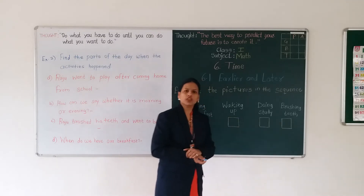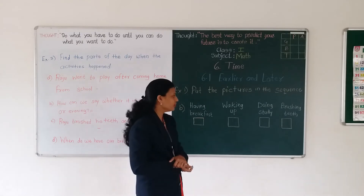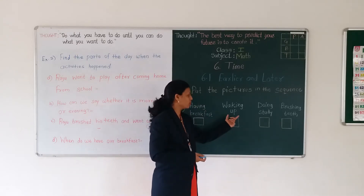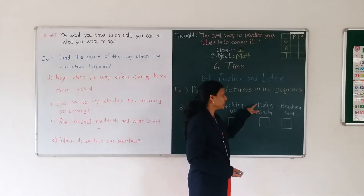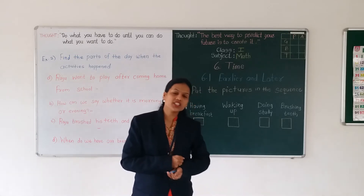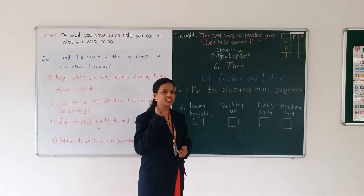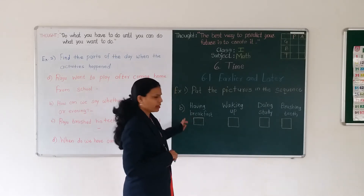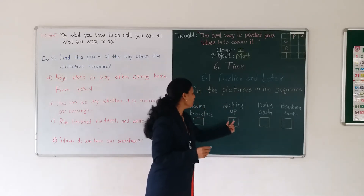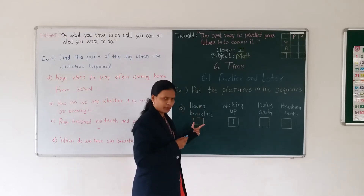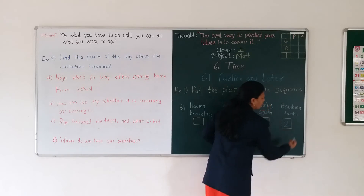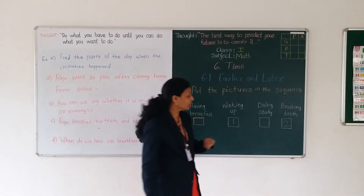The first picture shows the boy is having breakfast. The second picture shows the boy is waking up in the morning. The third picture shows he is doing study. And in the fourth picture, he is brushing his teeth. Can you arrange these activities in sequence? What is the first, earlier activity? Waking up - very good! Waking up is your first activity. What is the second activity? After waking up, you are brushing your teeth. So brushing teeth is the second activity.